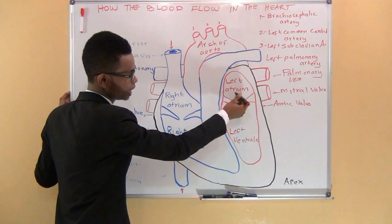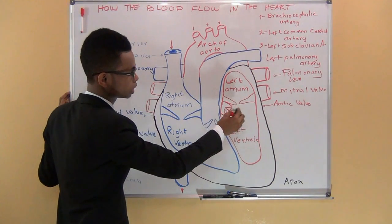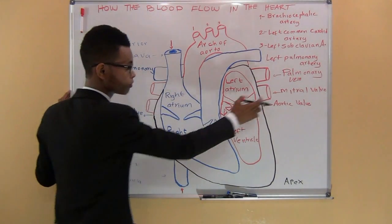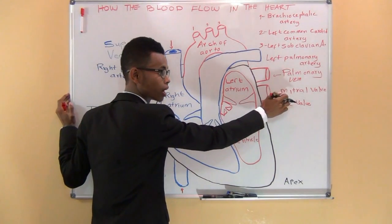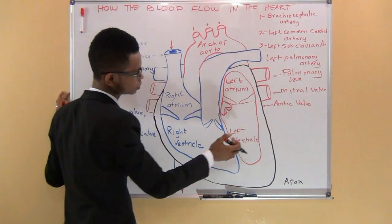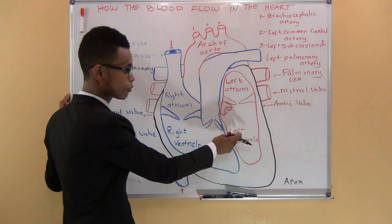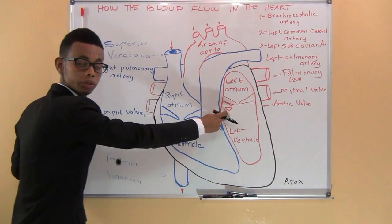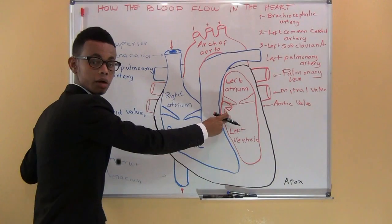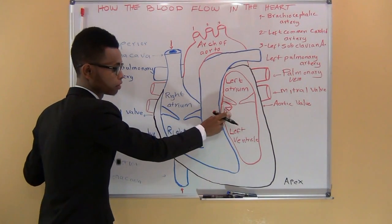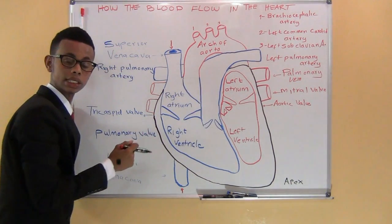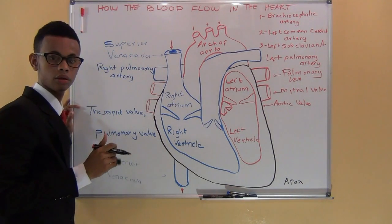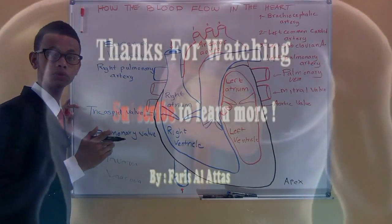From the left atrium, blood is pumped through the mitral valve into the left ventricle. The mitral valve is also called the bicuspid valve or left atrioventricular valve. When the left ventricle contracts, the pressure closes the mitral valve and opens the aortic valve, allowing blood to leave the heart via the aorta. When the pumping cycle is complete, the aortic valve closes to prevent blood from flowing back into the heart. Thank you for watching — that is how blood flow happens.